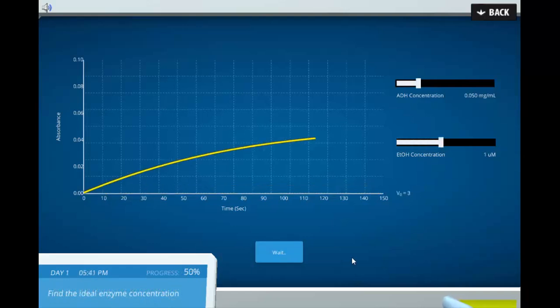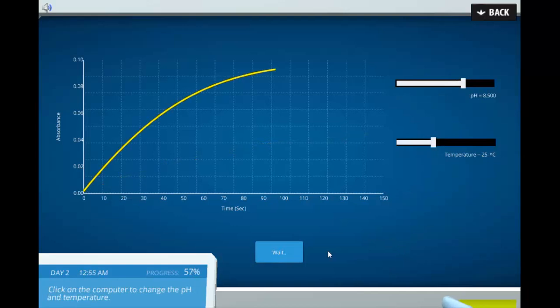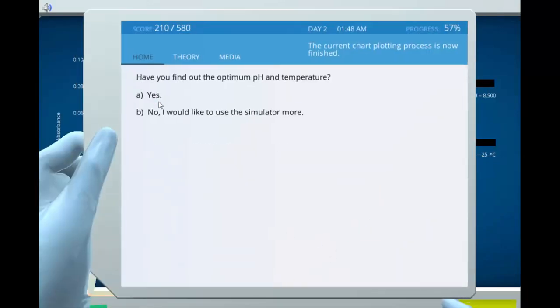Students can change parameters such as substrate concentrations, enzyme concentrations, temperature or pH and receive the corresponding results.